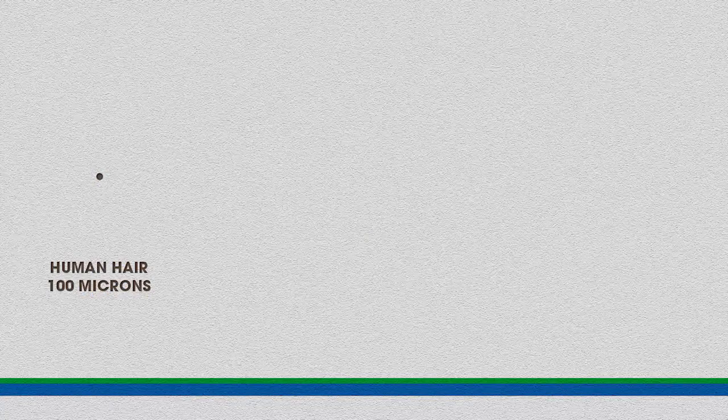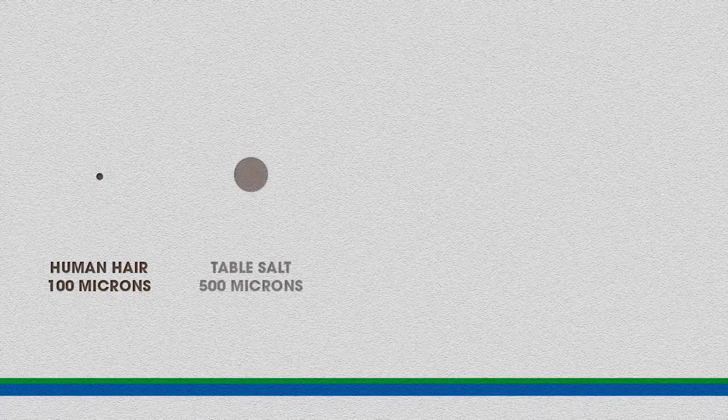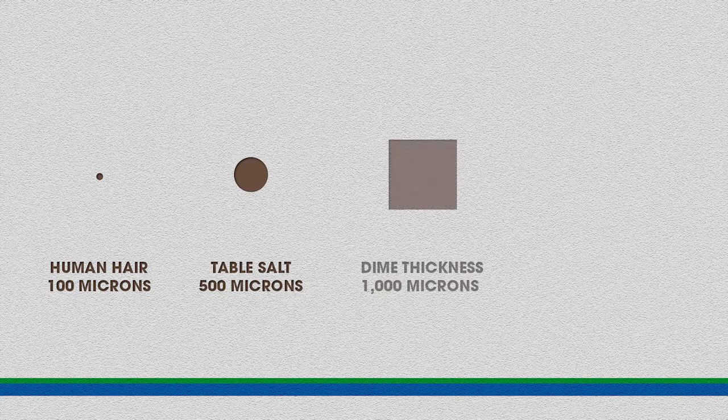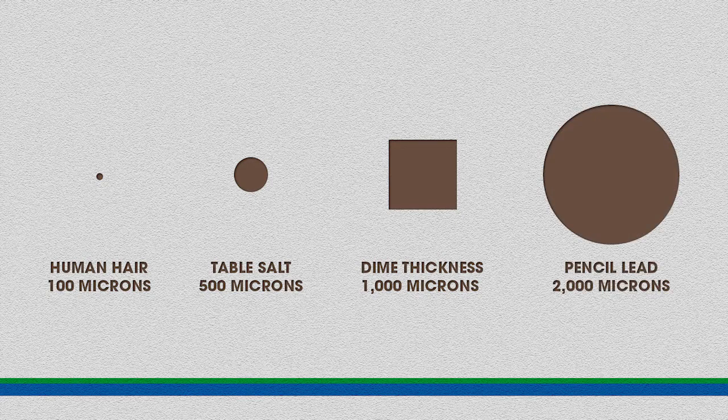The unit of measurement we use is a micron, so we measure the diameter of the spray droplets in microns. One micron is equal to one millionth of a meter. For most people, that's pretty hard to conceptualize, so an easy reference point is 100 microns — the diameter of a human hair. Table salt is around 500 microns in diameter. A dime is 1,000 microns thick — not the diameter, but the thickness. And pencil lead is about 2,000 microns in diameter.